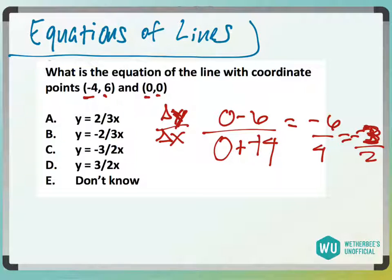So again, you could think of it as, because this is (0, 0), it's going to be 6 over -4, which is the same thing as if we had to subtract it from the 0. So it would be -3/2x, which would be answer choice C.